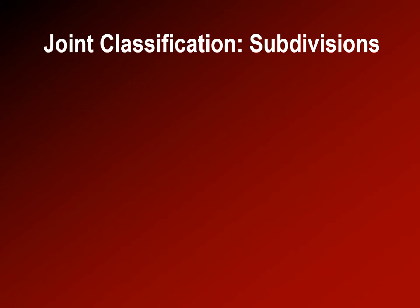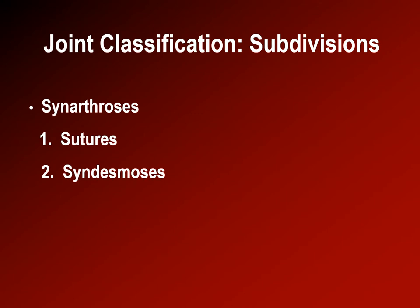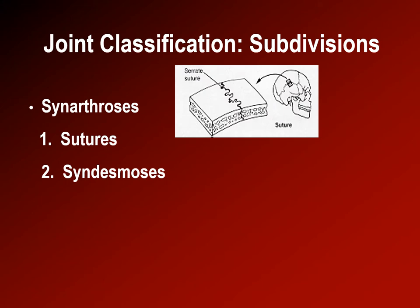The most stable of the joints are the first type, the synarthroses, which include the sutures and the syndesmoses. Sutures are joints where bone meets bone and they occur because of maturation, such as in the skull or in the pelvis. When we're young there are wide areas of hyaline cartilage, but as we mature the cartilage shrinks and the bone grows across, joining together as sutures.